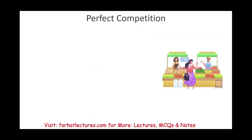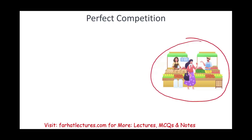Starting with perfect competition — what is perfect competition? Let's take a look at this picture. Before I discuss it, this picture is a perfect competition. Those are two stores, store one and store two. They are basically selling the same thing. I believe these are corns — this lady is selling corns and this individual is selling corns as well. She's selling tomatoes and he's selling tomatoes.